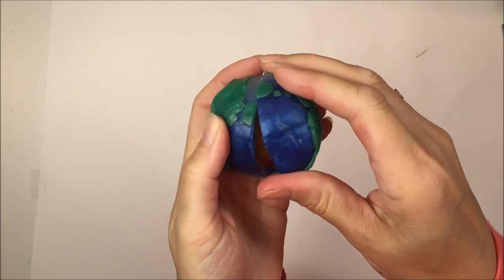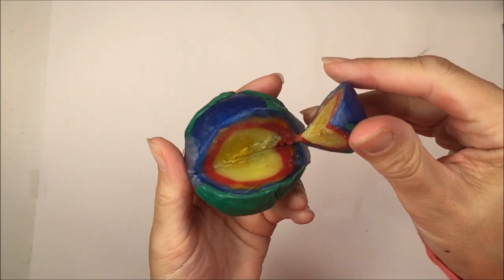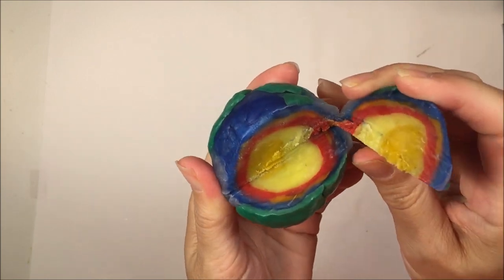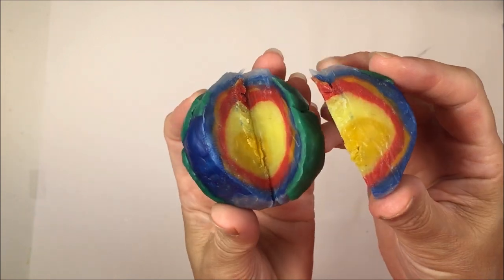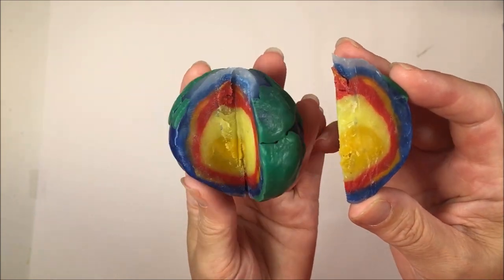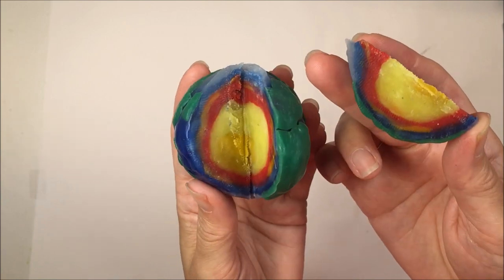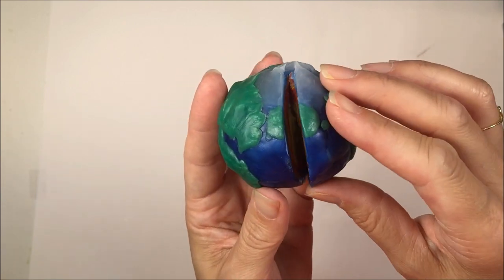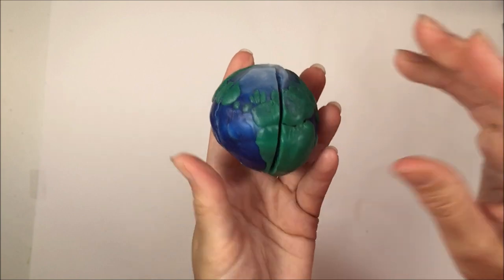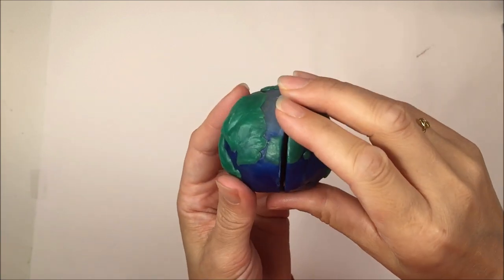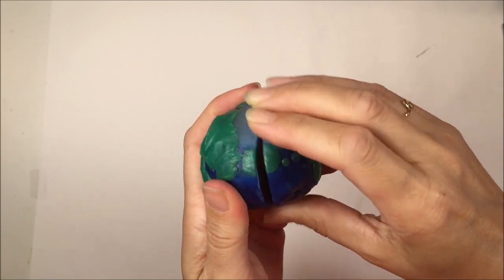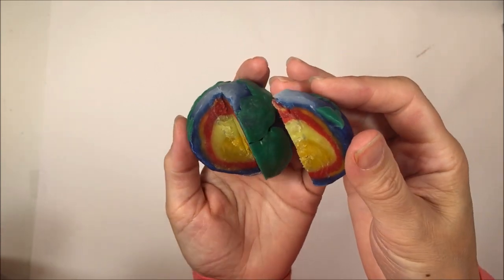And here comes the exciting part and that's what it looks like on the inside. And the first thing my fifth grader said was that's not what it's supposed to look like. And that's true. Our core is way too big and our mantle is too small and our crust is way too thick. But it was a lot of fun to do anyway. It was a great demonstration and we are all excited to try it again and this time be a little bit more accurate.